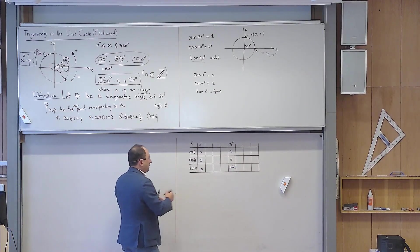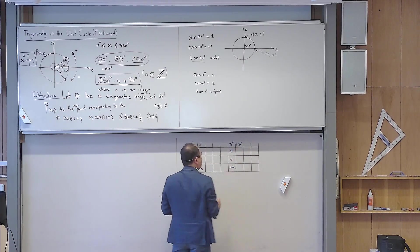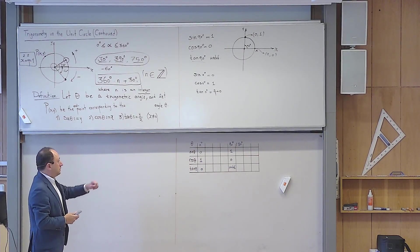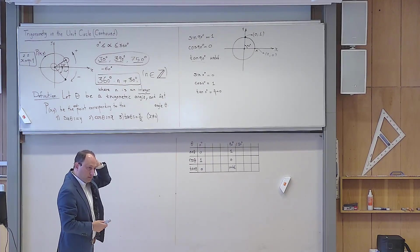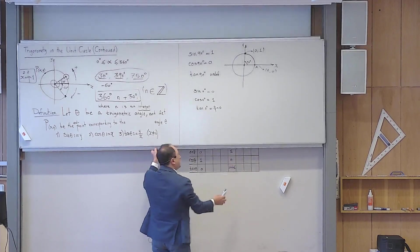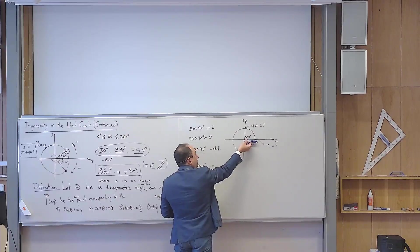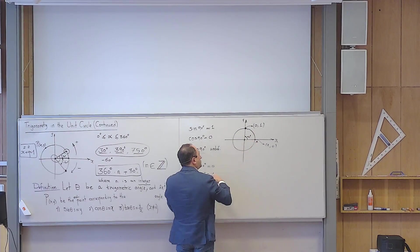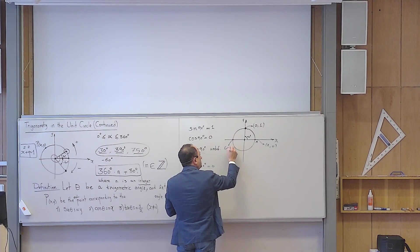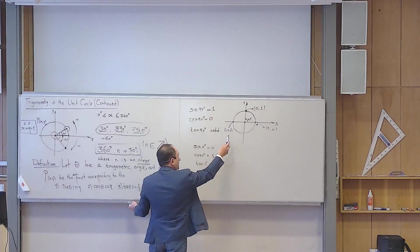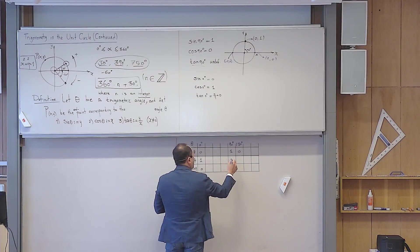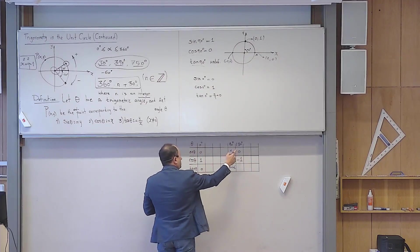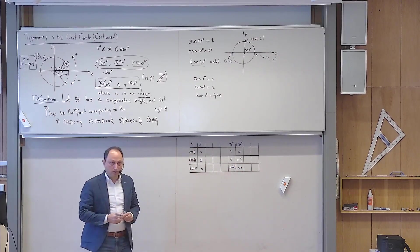What about 180 degrees? You start here and rotate 180 degrees, ending up at the left side of the circle. The final point has x-coordinate minus one and y-coordinate zero. By definition, sine is the y-coordinate, which is zero. Cosine is the x-coordinate, which is negative one. Tangent is y over x, which is zero divided by negative one — that is zero.